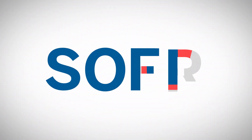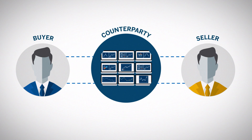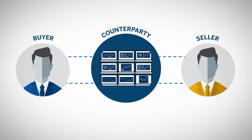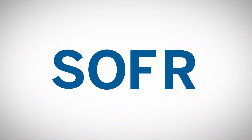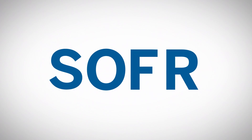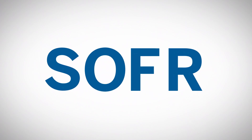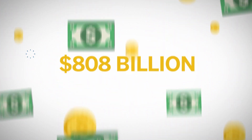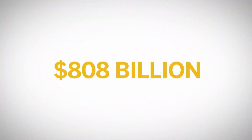The SOFR reflects a very broad universe of overnight U.S. Treasury repo transaction activity, making it a benchmark for all seasons, regardless of future shifts in market preferences for bilateral versus triparty repo. The SOFR is based upon a massive, diverse, and fully transaction-based data set drawn from three sources, with an aggregate average daily volume of $808 billion based on Q3 2017 data.